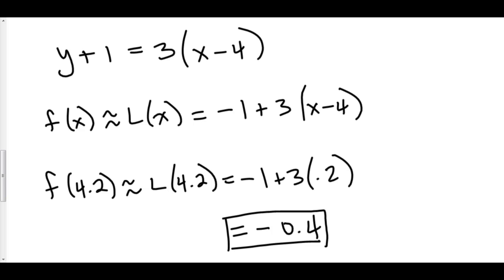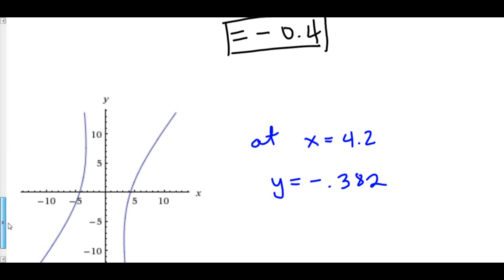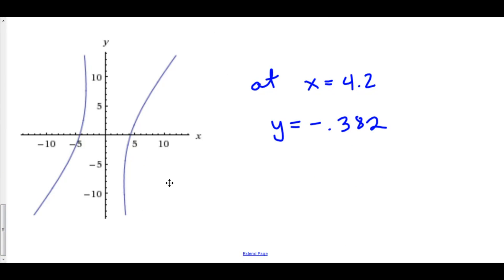Finally, I've actually graphed this curve using WolframAlpha.com. Now at x equals 4, y equals negative 1, here is the point 4 comma negative 1. When we created that linear approximation, we found the tangent line at this point. We then used it to approximate what happens at x equals 4.2.